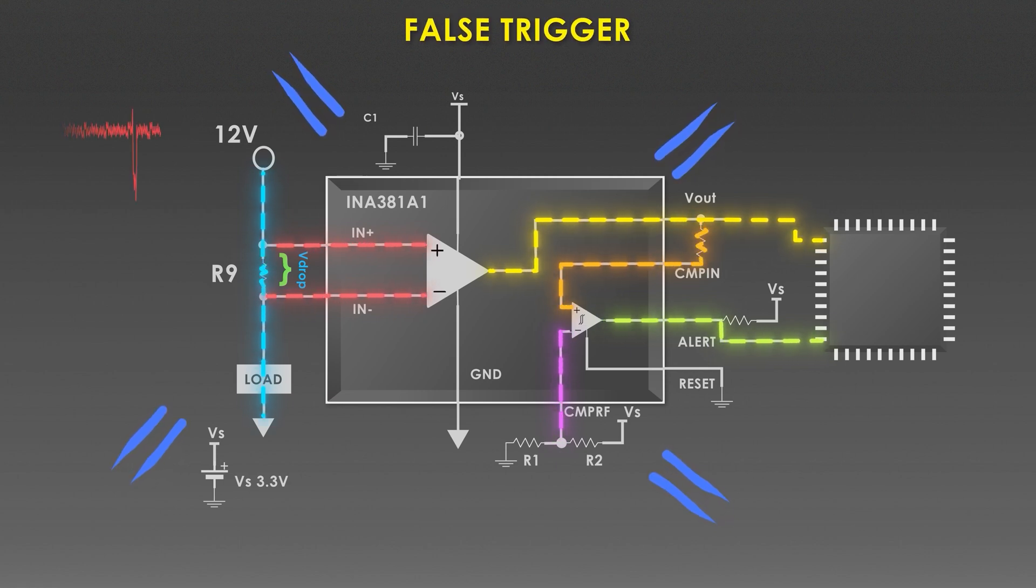To prevent that, we can implement hysteresis, which prevents rapid on-off switching due to small fluctuations in the current. And this small resistor R12 makes sure that the alert does not reset immediately, preventing false alarms.